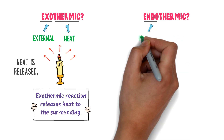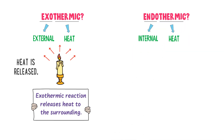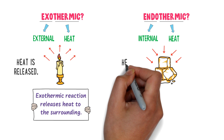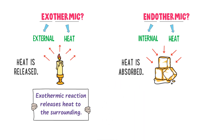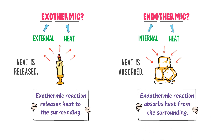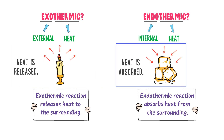Secondly, the word 'endo' means internal and 'thermic' means heat, so endothermic means absorbing heat from the surrounding. For example, consider melting ice — the melting ice absorbs heat energy from the surrounding in order to change its physical state. Energy is absorbed from the surrounding, so we say this is an endothermic process. Therefore, endothermic reactions absorb heat energy from the surrounding.